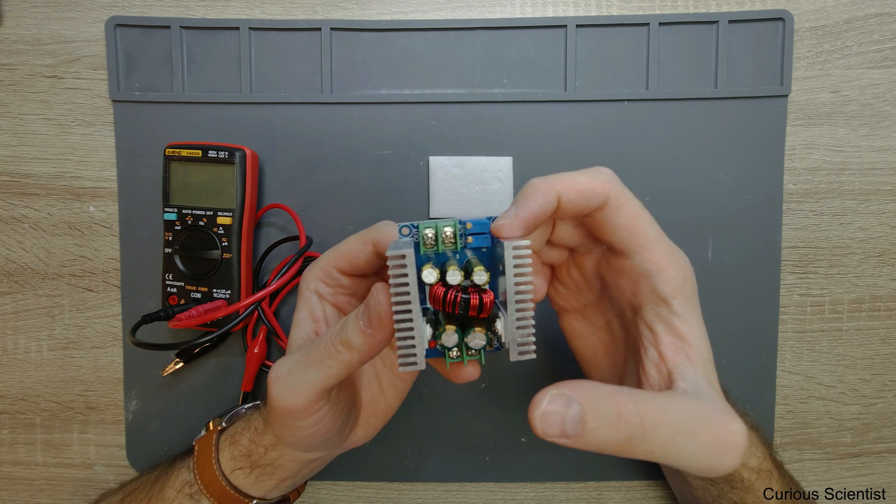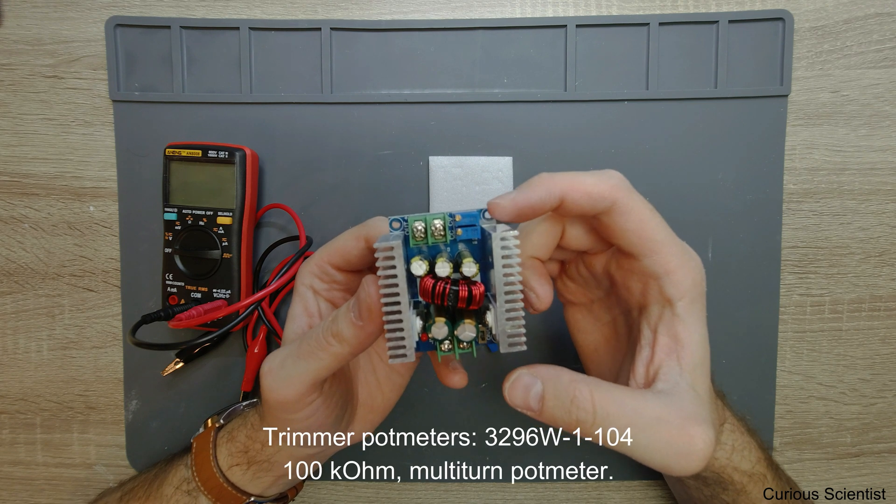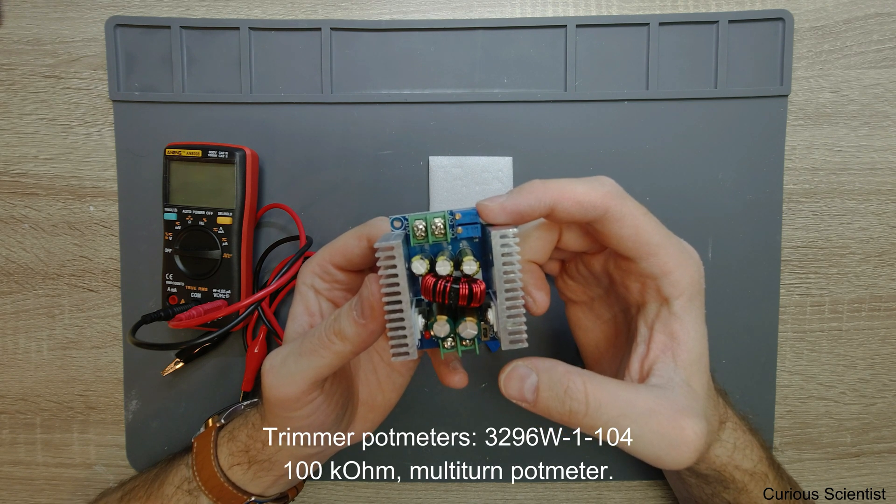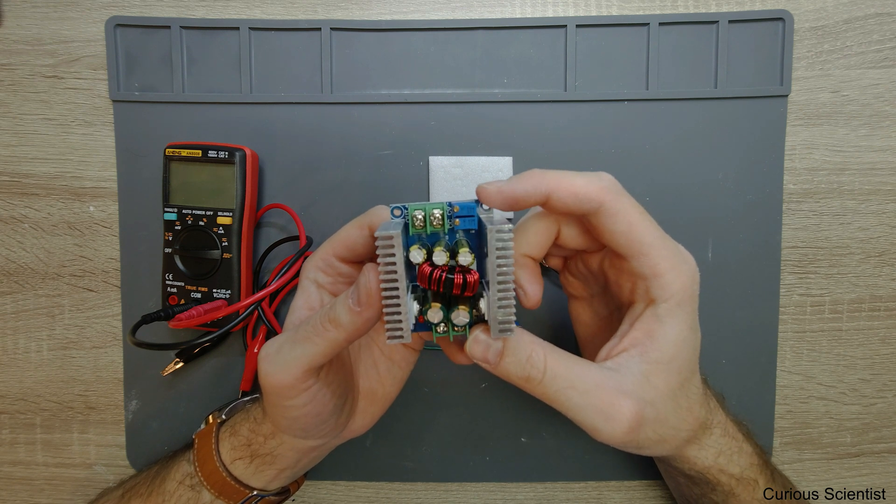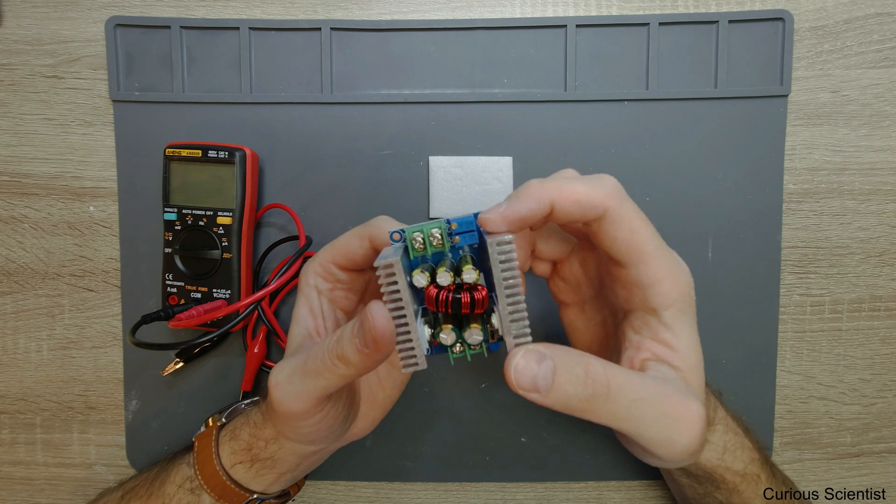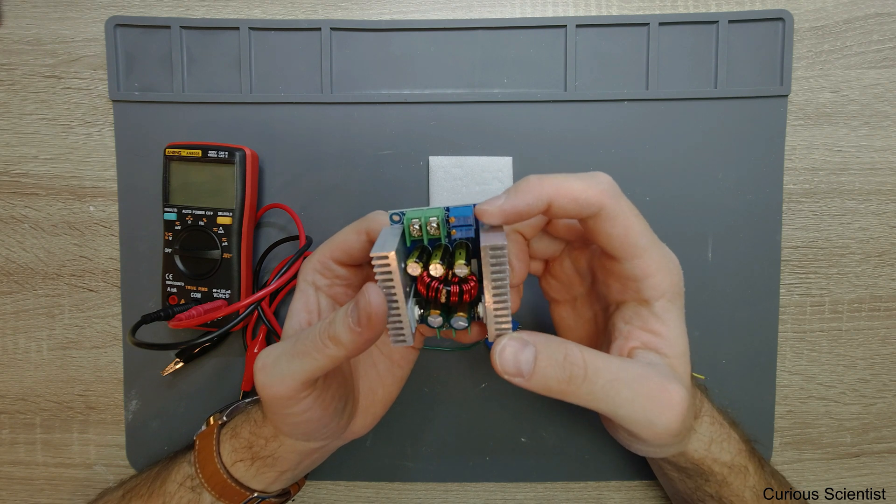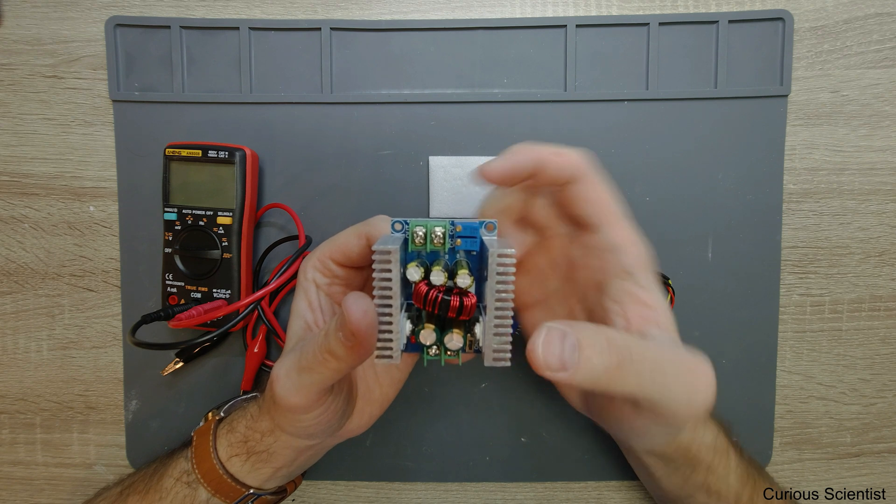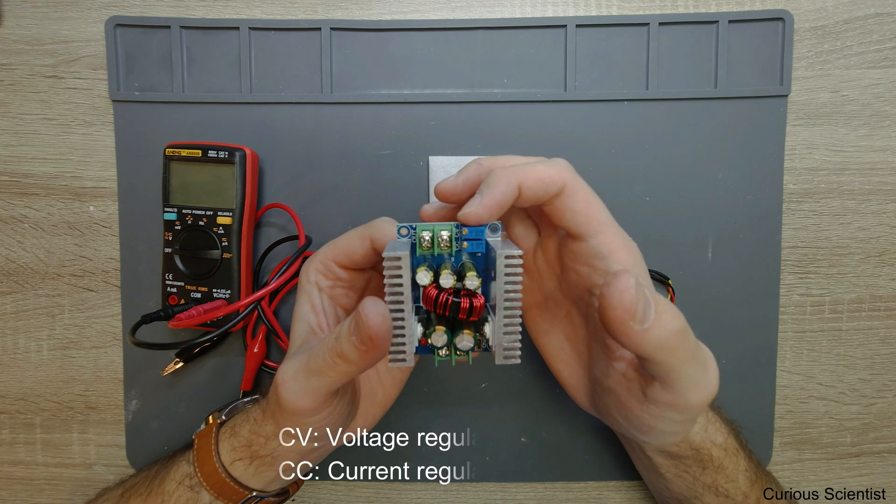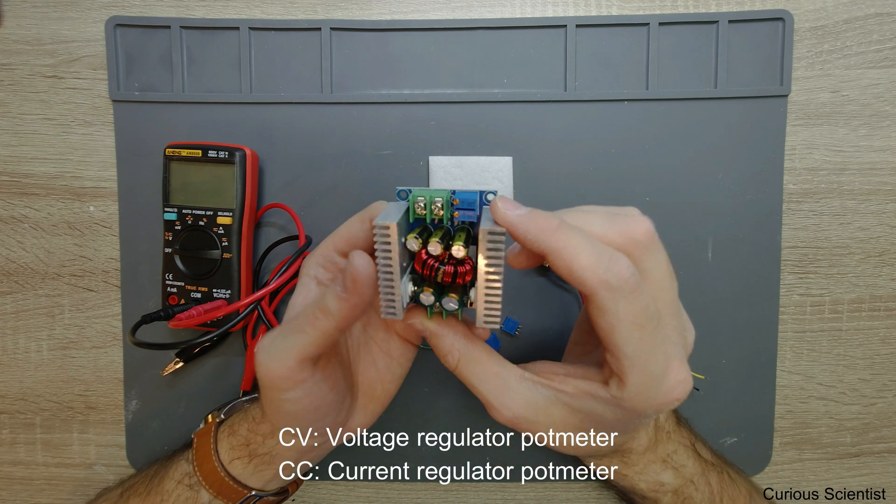The way you regulate the voltage and current is by changing the resistance of these trimmer potentiometers. They are 100 kilohm potentiometers, so that's what this 104 stands for. You can see there's text CV and CC, so one is for current and one is for voltage.